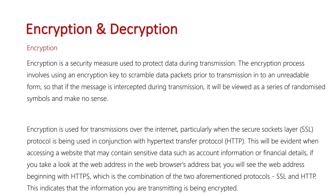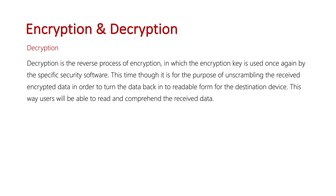You'd see this most likely when you access something where you are using your financial details. The other side of encryption is decryption, which is the reverse process of encryption, in which the encryption key is used once again by the specific security software. This time it's for the purpose of unscrambling the received encrypted data at the destination, turning that data back into readable form so that a user can understand and comprehend the received data. So let's try to illustrate this process of encryption and decryption.